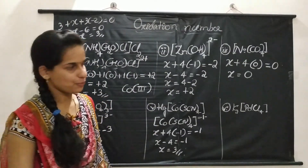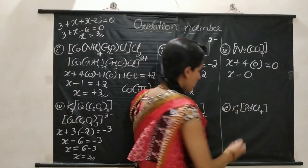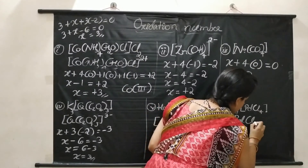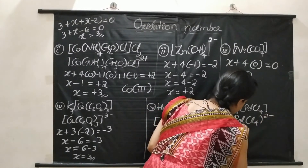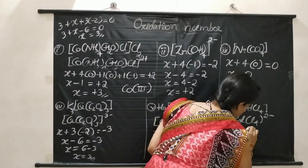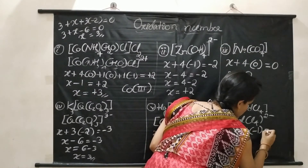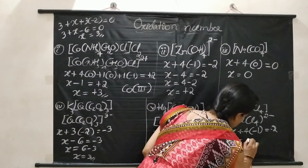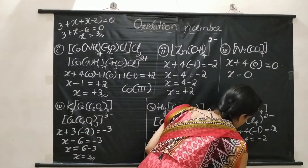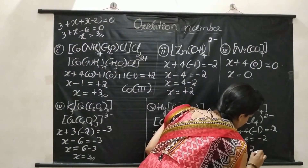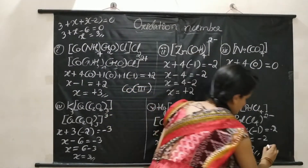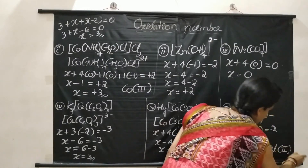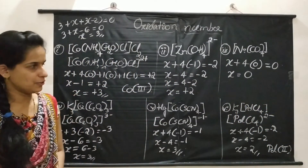The sixth example is K2[PdCl4]. K2 means the charge on the coordination sphere is 2 minus, so [PdCl4]²⁻. Writing the equation: X plus 4 times Cl⁻ (charge minus 1) equals minus 2. So X minus 4 equals minus 2, giving X equals plus 2. Palladium is in the plus 2 oxidation state.